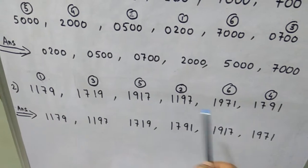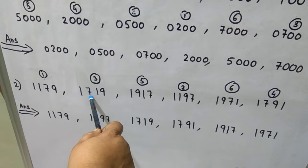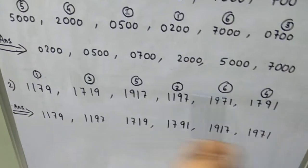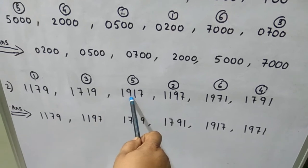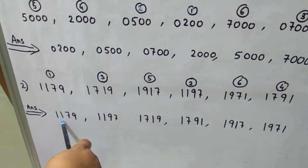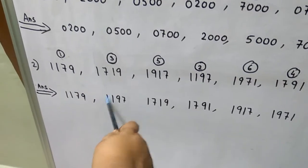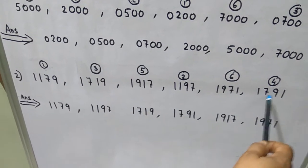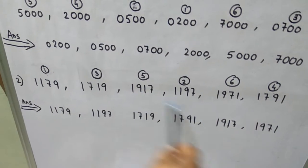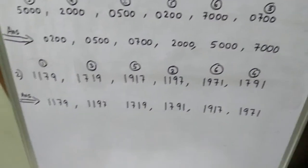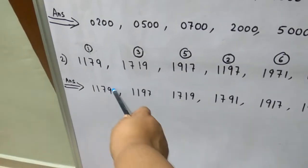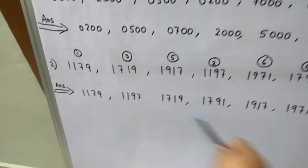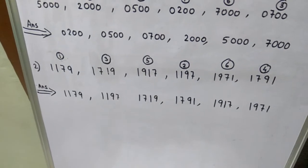Now for the remaining numbers with 100s digits 7, 9, 9, and 7: there are two 7s — 1719 and 1791. Their 10s digits are 1 and 9, so 1719 gets rank 3 and 1791 gets rank 4. Then 1917 gets rank 5 and 1971 gets rank 6. Rearranged in ascending order: 1179, 1197, 1719, 1791, 1917, 1971. Count them — 1, 2, 3, 4, 5, 6 — there are 6 numbers. You have completed the answer. Hope you have understood. Try to solve the rest of the questions. Thank you, God bless students.